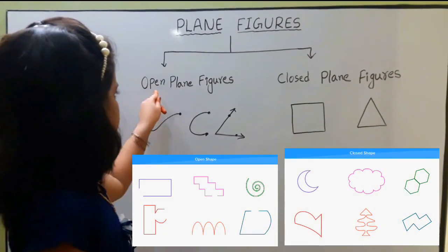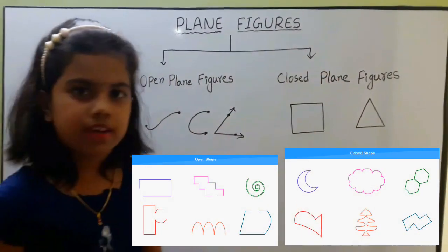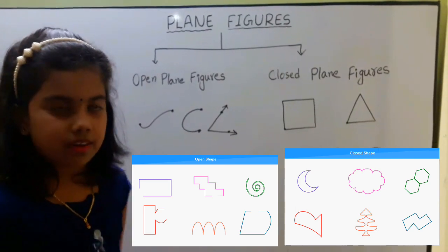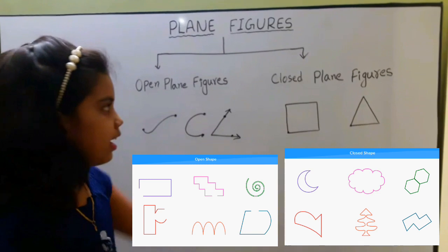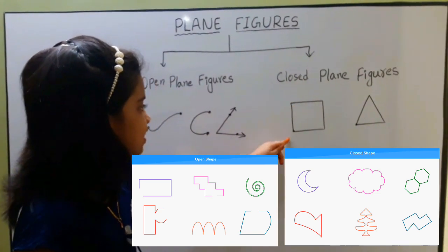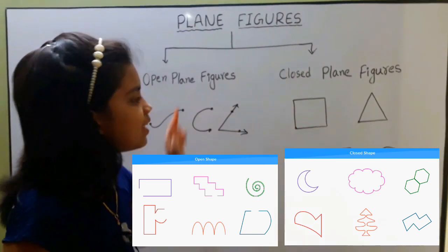Plane figures are two types: open plane figures and closed plane figures. In open plane figures, starting and ending points are different. In closed plane figures, starting and ending points are same.